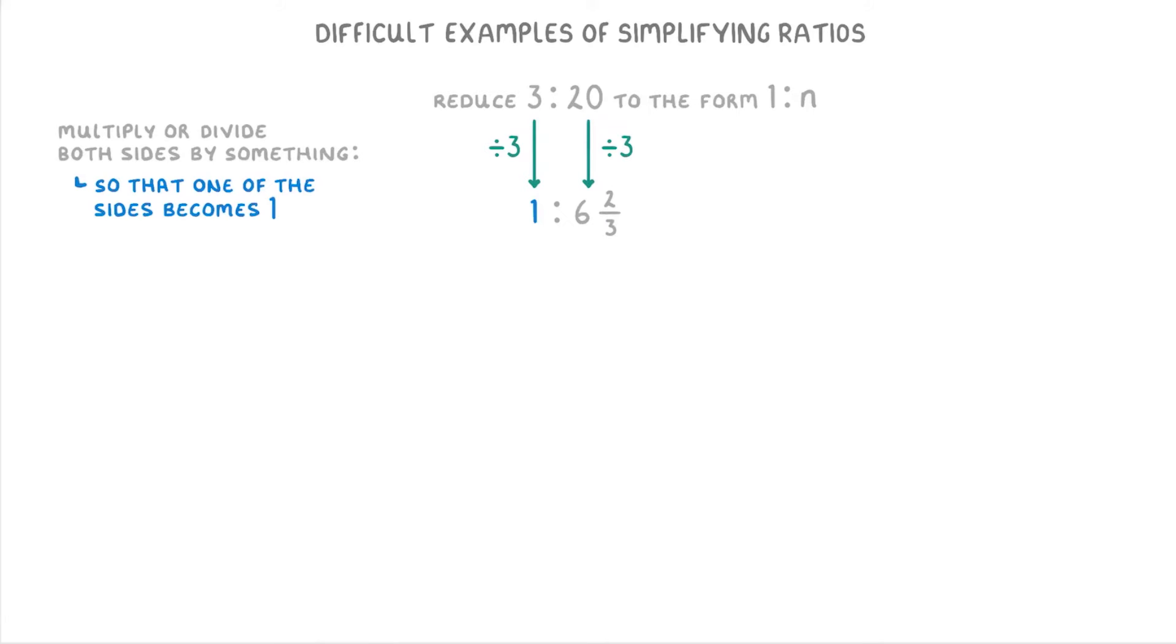Or if you wanted it in decimals, then 6.6 recurring. This might feel a bit weird because with ratios we normally try to keep whole numbers, rather than having decimals or fractions like this. But with this type of question you'll often end up with non-whole numbers, so don't worry about that.